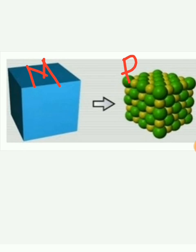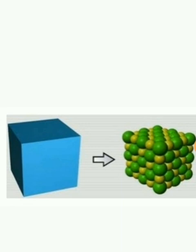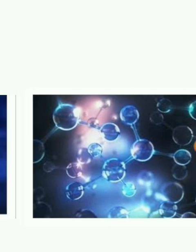These particles can be atoms or molecules. Particles are also called as molecules. Here, particles are called as molecules. Molecules are subdivided into elements. Elements are further divided into the smallest unit of the element.